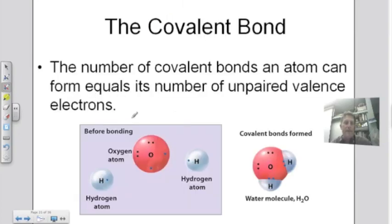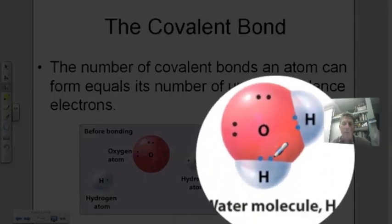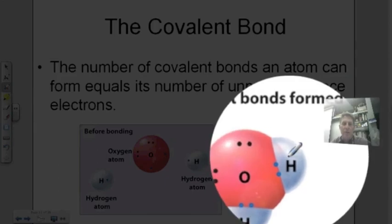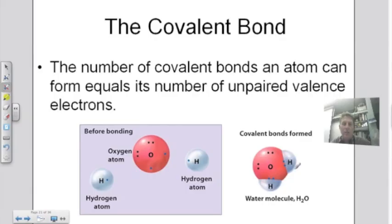Let's look at water. Oxygen has six valence electrons in its outer shell, with two unpaired. Hydrogen has one valence electron each. The unpaired electrons pair up — each hydrogen pairs with one of oxygen's unpaired electrons. Counting around the oxygen atom gives eight electrons, satisfying the octet rule. Each hydrogen has two electrons around it, satisfying the duet rule. That's the Lewis dot structure, or electron dot structure, for water.